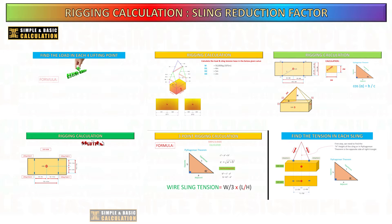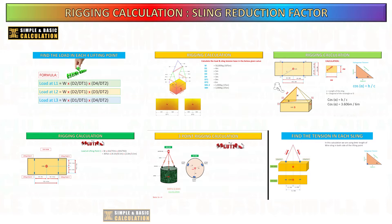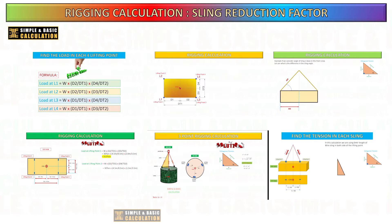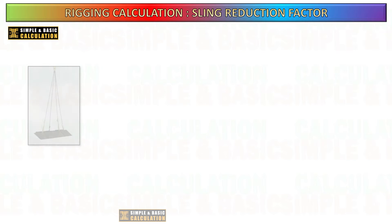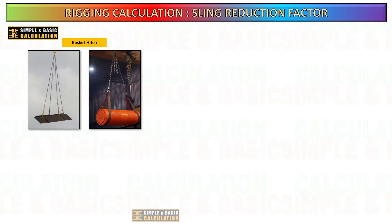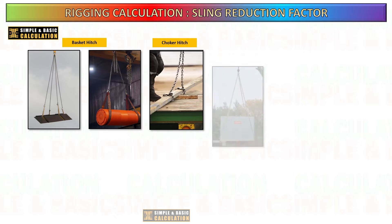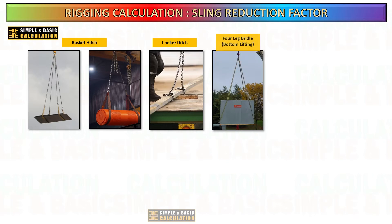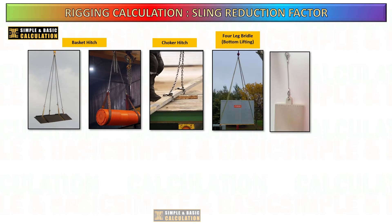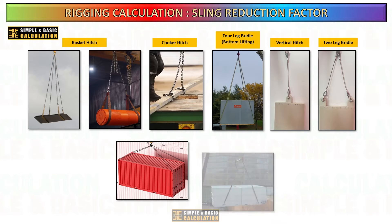Allow us to review the key considerations to bear in mind during your planning phase. We must not overlook the importance of the sling reduction factor during hoisting of load. There are several factors that influence the reduction in sling capacity caused by the type of rigging method. It is essential for riggers, lifting supervisors, or lifting engineers to consider the sling reduction factor when calculating the safe working load of a lifting sling, to ensure that the lifting operation is performed safely and within the rated capacity of the equipment.